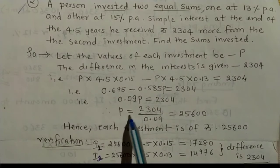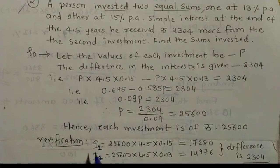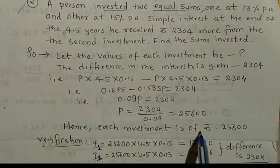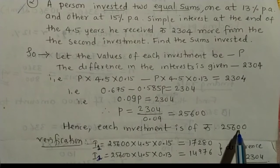Hence, P is equal to 25,600. Hence, each investment is Rs. 25,600.